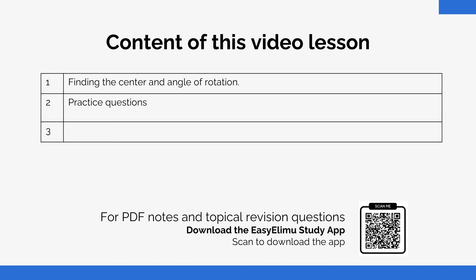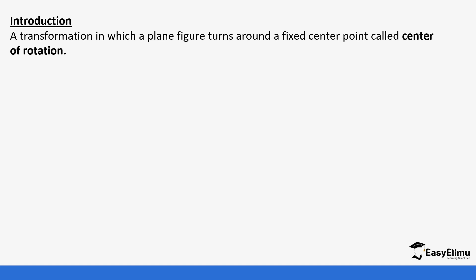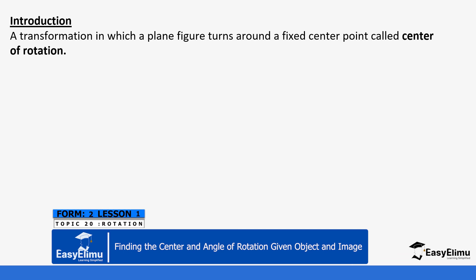We'll be discussing majorly not on a Cartesian plane — we'll talk about the Cartesian plane, that is the x-axis and y-axis plane, later on. But first, on a plain plane, if you're given an image and an object. A transformation in which a plane figure turns around a fixed point is referred to as rotation. There is a specific fixed point at which the plane figure is turned around, and it can turn in a certain degree or angle.